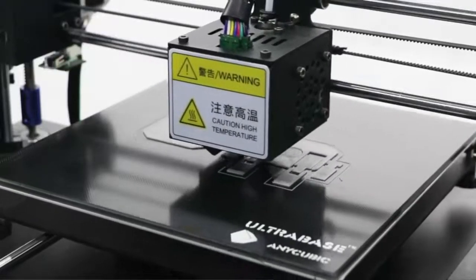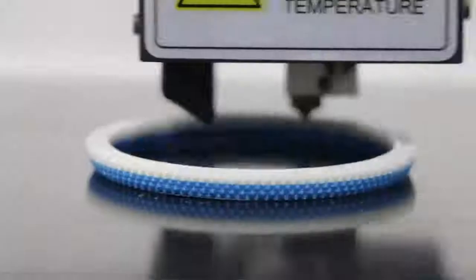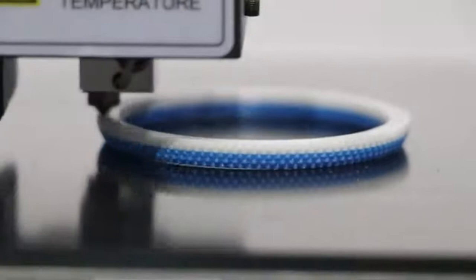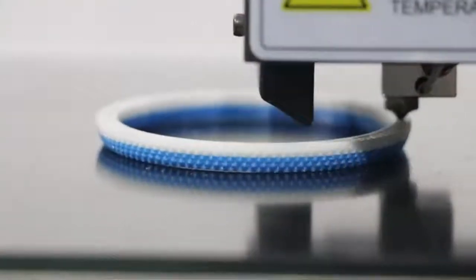Anycubic Ultra Base. Patented 3D printer printing platform surface coated with a patented microporous coating, with excellent adhesion when printing, and then effortlessly falls off the bed when it cools to room temp at the end of the print.